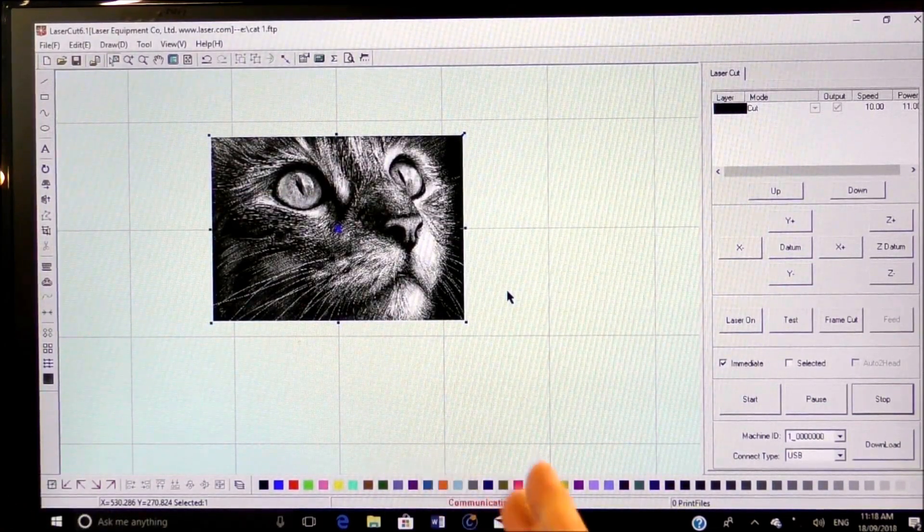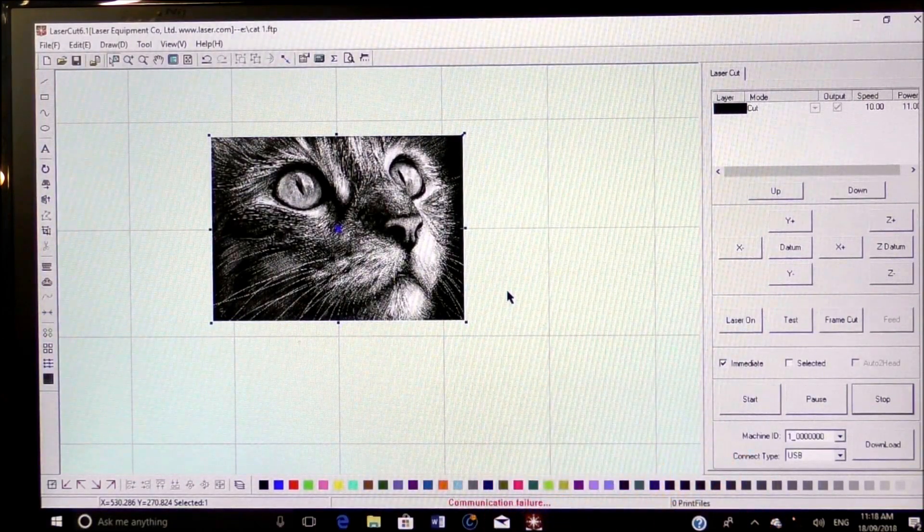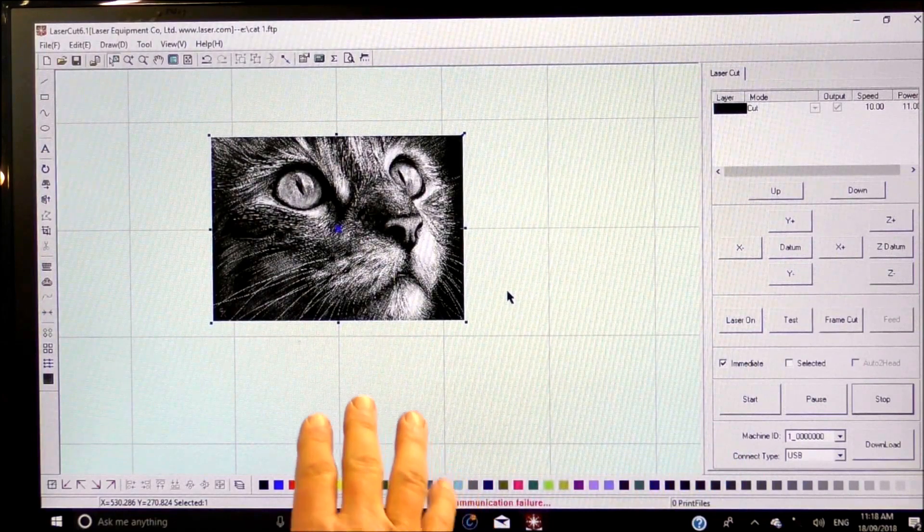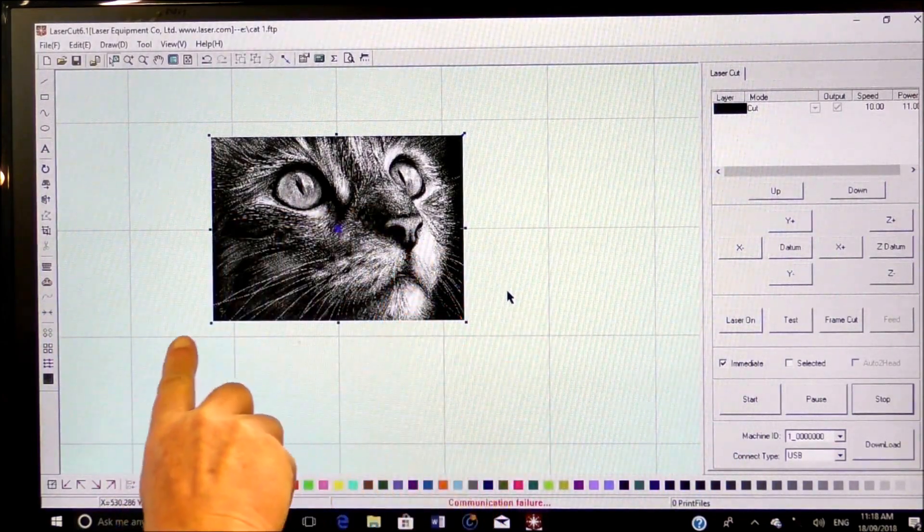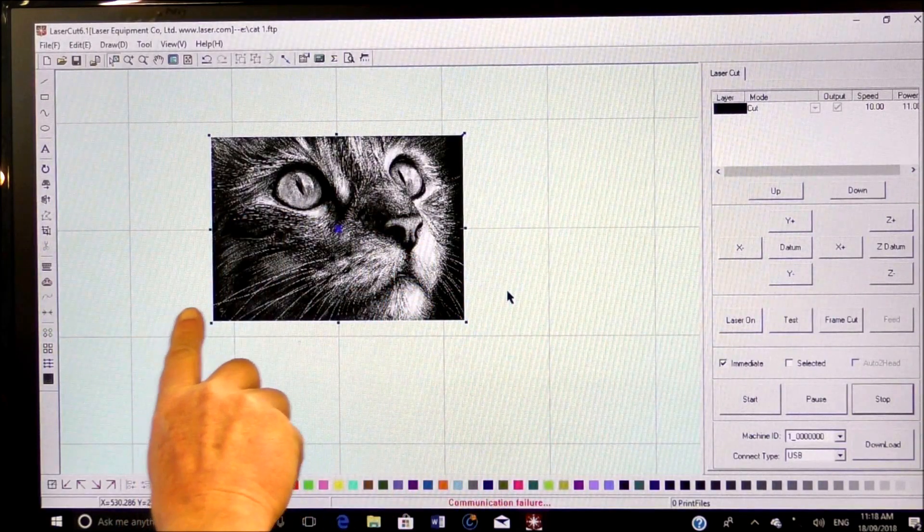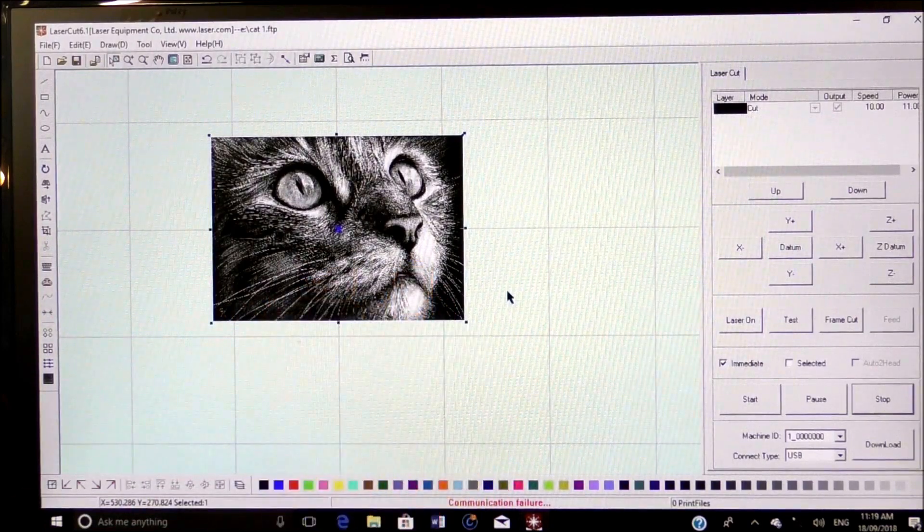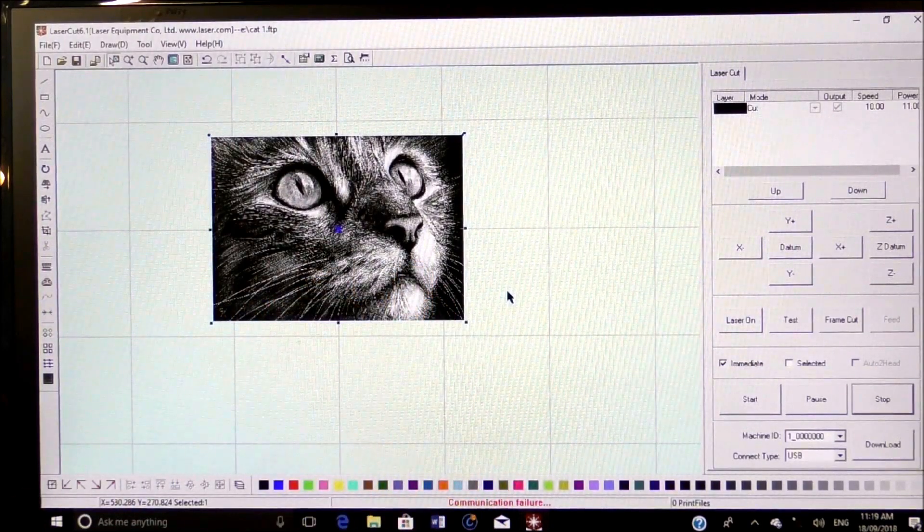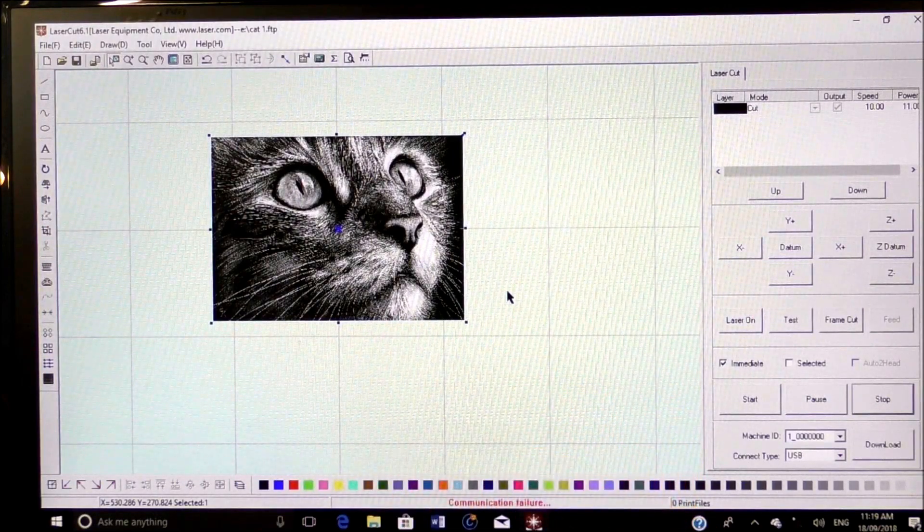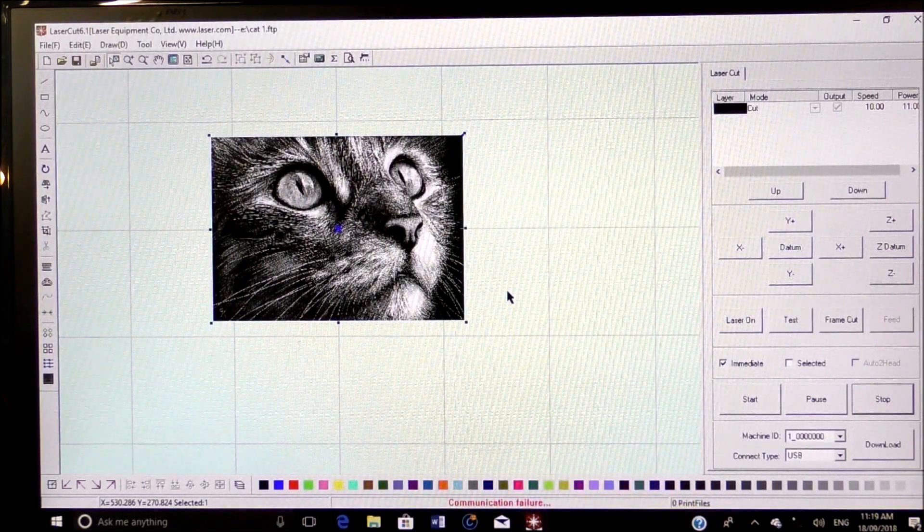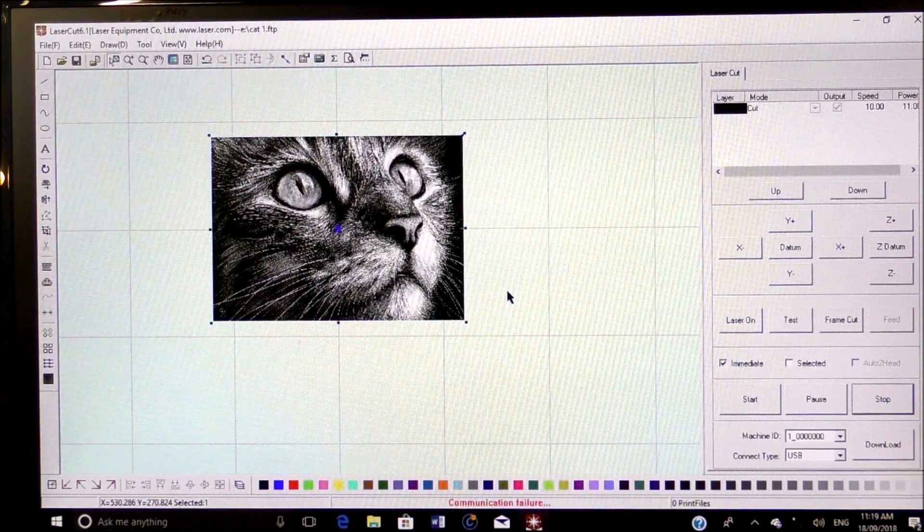When a laser etches or burns in glass or plastic or something like that, what happens is if I left the picture like this, the laser will fire in the black areas and not fire in the white areas. But when the laser impacts on glass or plastic it shows up white or gray.